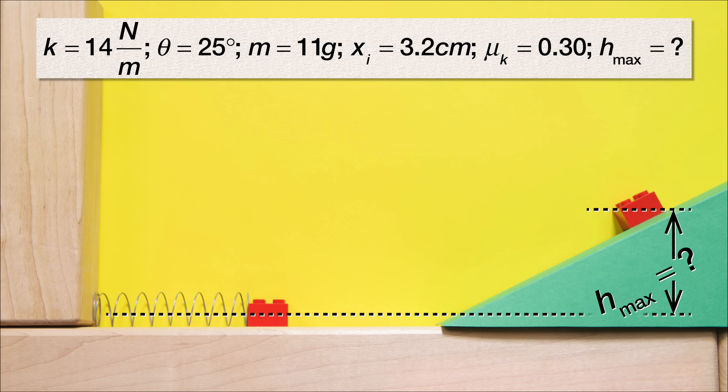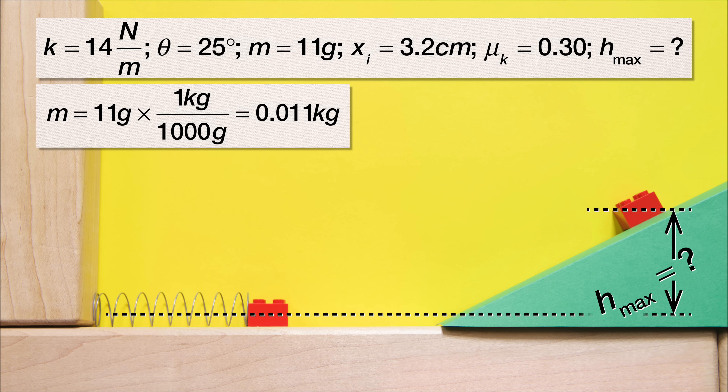In other words, we need to convert the mass of the block from grams to kilograms. So we multiply 11 grams by 1 kilogram divided by 1000 grams, and the mass of the block is 0.011 kilograms.